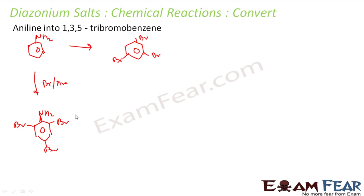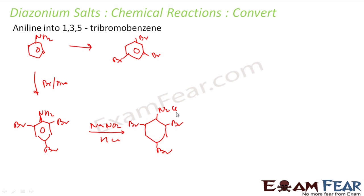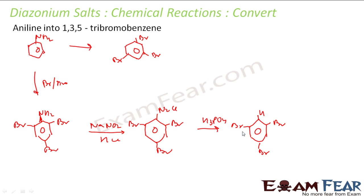The next challenge: after adding bromine, I have to create a diazonium salt. For this I will react with NaNO2 in HCl — the bromine will be intact and NH2 will be converted to N2⁺Cl⁻. Now if I want to reduce, I can use ethanol (C2H5OH) or H3PO2. What will happen is N2Cl will be replaced with H, and this is the compound I am looking for — both structures are the same.